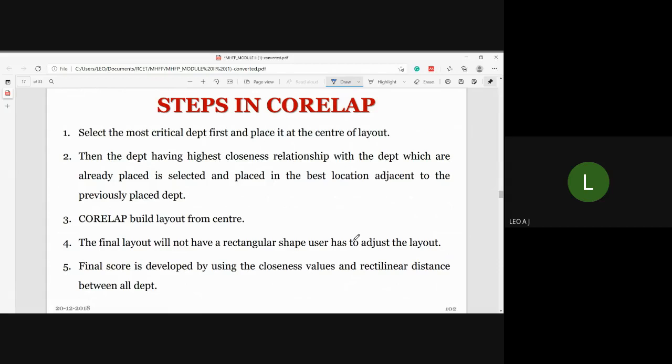To summarize the CORELAP steps: Most critical department is identified and placed at center. Then, departments having highest closeness relationship with already-placed departments are selected and placed in the best location adjacent to previously placed departments. CORELAP builds the layout from the center.